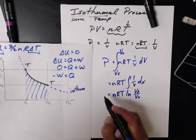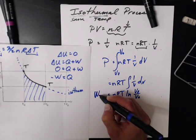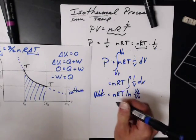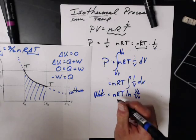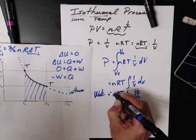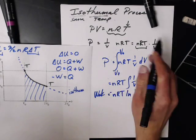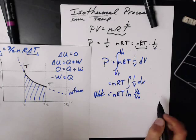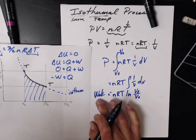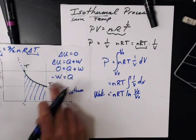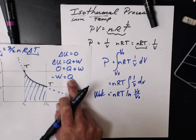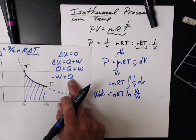There should be a negative sign in there as well. Once we can calculate how much work there is, it'll tell us how much heat is moved as well.